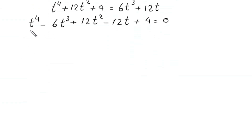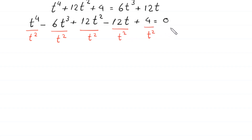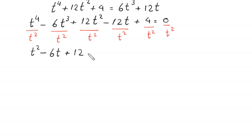Now we divide both sides of this equation by t squared. So t to the power 4 divided by t squared becomes t squared, minus 6t cubed divided by t squared becomes 6t, plus 12t squared divided by t squared becomes 12, minus 12t divided by t squared becomes 12 over t, plus 4 divided by t squared, all equal to 0.